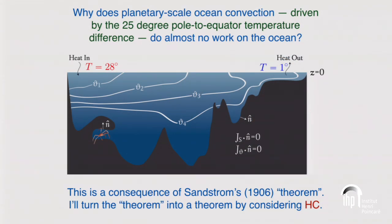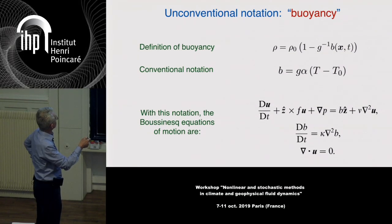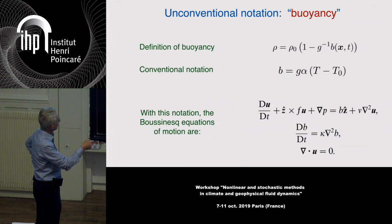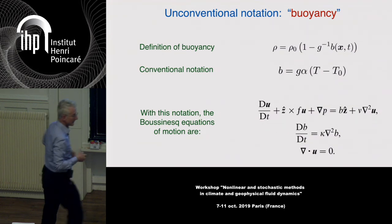I'll address this by considering horizontal convection. I'll use buoyancy b instead of density — it makes the equations tidier. Using a Boussinesq approximation with rho-nought constant, buoyancy is the small variable part of density. In a thermally stratified fluid, buoyancy has dimensions of acceleration and appears in the momentum equations as a vertical force. These are the Boussinesq equations I'll be discussing for the rest of the talk.